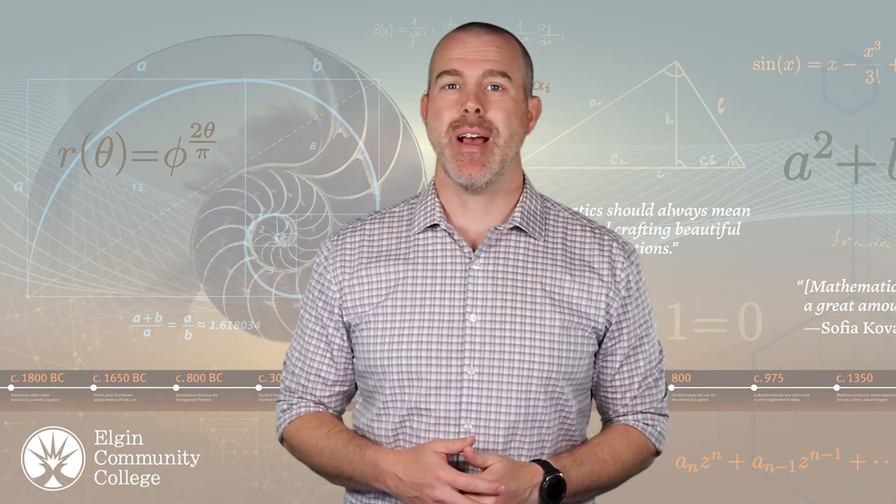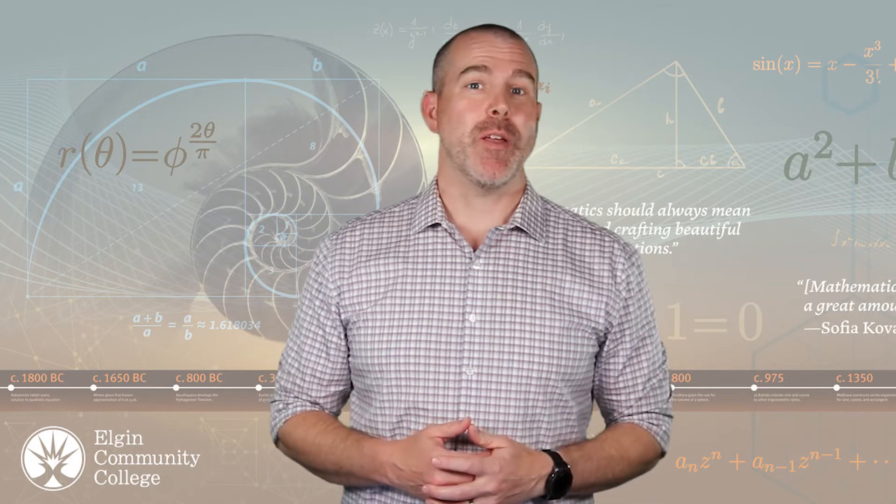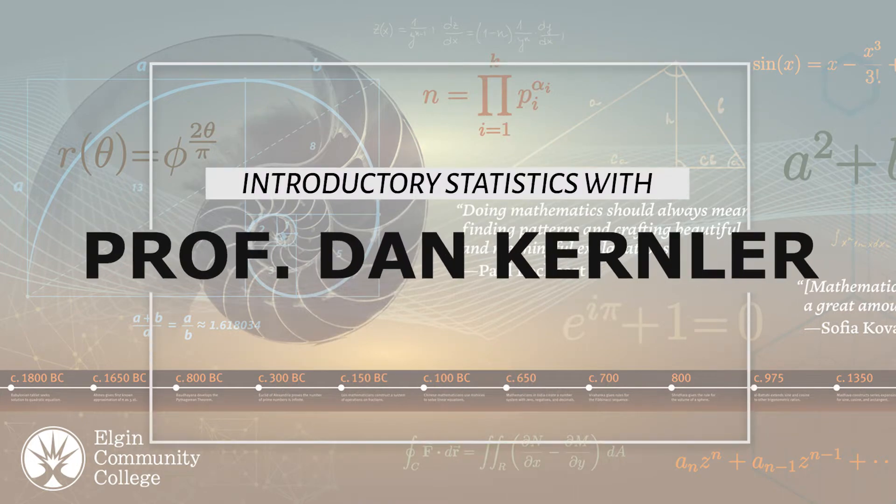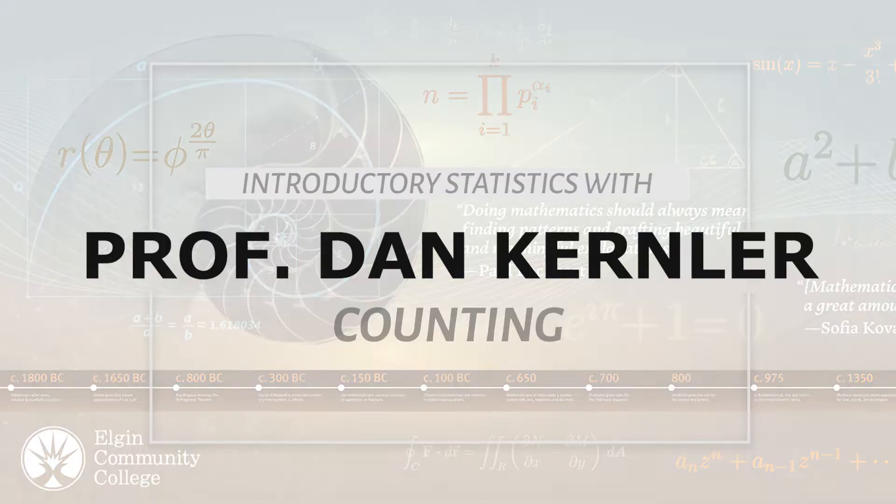Hello, this is Professor Dan Kernler of Elgin Community College. This is another video in my statistics series. This video is all about different ways of counting. So what we're really talking about in this video is different ways of counting how many ways something can happen. I like to start this with a really simple example.